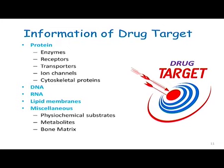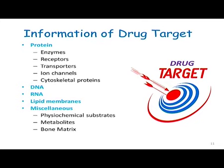Proteins constitute enzymes, receptors, transporters, ion channels, and cytoskeletal proteins — all of these are the primary drug targets, which are proteinaceous in nature. Apart from proteins, other drug targets might be DNAs or RNAs (nucleic acids), or in some cases a lipid membrane. A cellular membrane consists of a lipid bilayer, which can also sometimes act as a drug target, and in very rare circumstances certain metabolites, bone matrices, and physiochemical substrates can be targets.